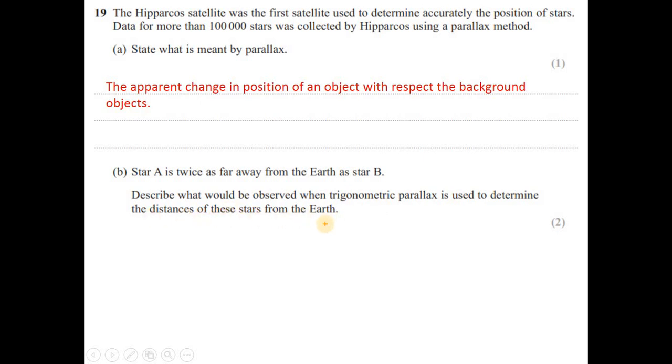Remember, the parallax angle, let's suppose theta, is inversely proportional to D. So higher the distance, smaller the angle. So if the star A is twice as far as from B, then theta would be half. So you can say that for star A, the parallax angle will be half of that of the star B.